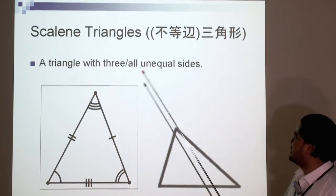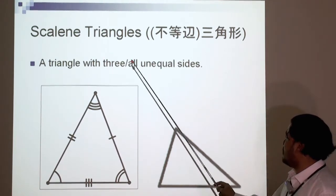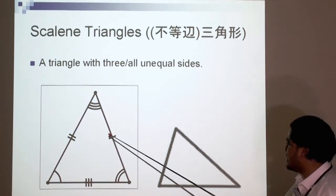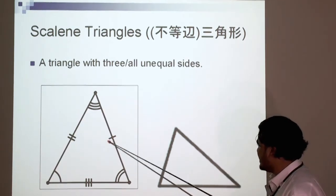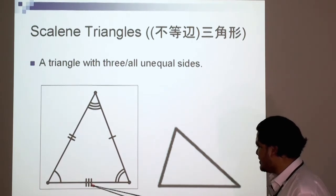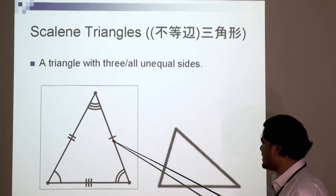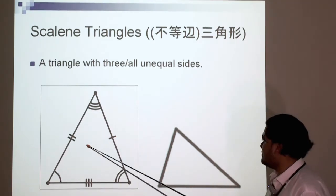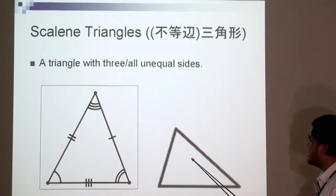Scalene triangles is a triangle with three or all unequal sides. Now, as you notice, that side is different from that side, it's different from that side, and therefore, if all sides are different, then all angles are different. More on these marks later on. We'll be explaining what they mean. Another example of a scalene triangle.